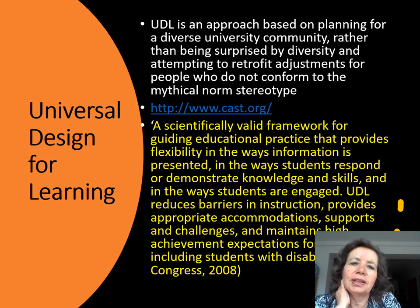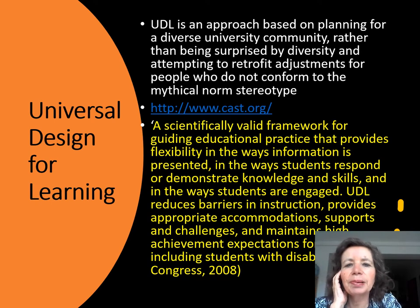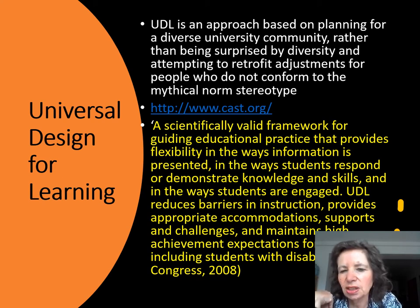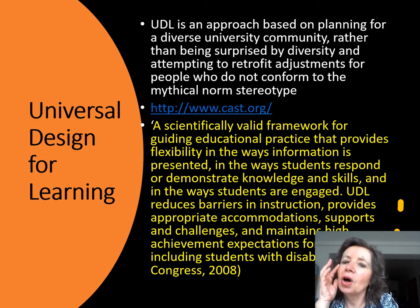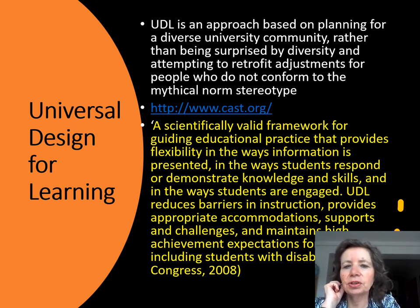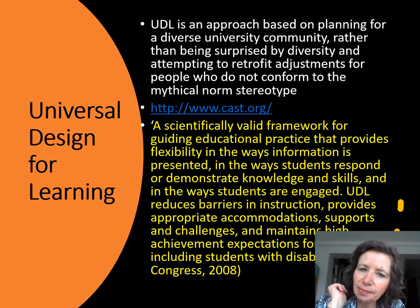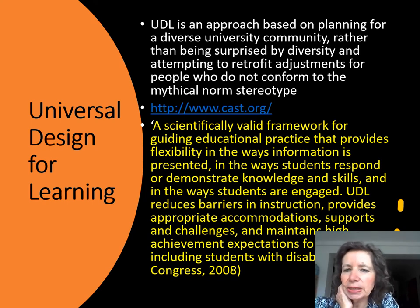Universal design for learning is an approach that underpins the whole idea of inclusive learning in higher education. It's based on planning for a diverse university community rather than being surprised by diversity and then attempting to retrofit adjustments for people who don't conform to this mythical norm stereotype, which doesn't actually respond to anything in reality. Underneath in yellow is a definition from CAST, which is where universal design for learning originated — it's about planning for everybody and doing joined up thinking, which is something that we are very good at in professional services.